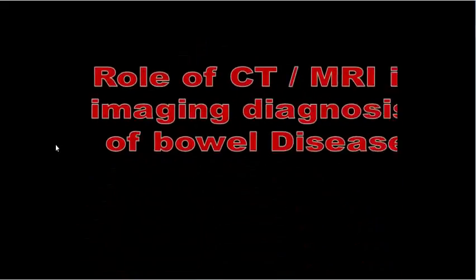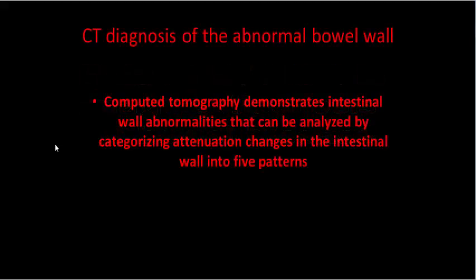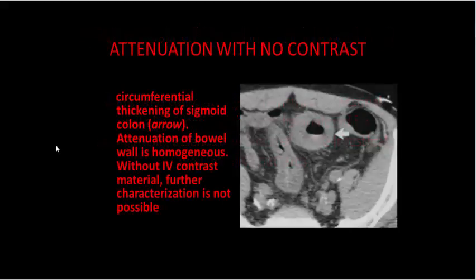Bismillahirrahmanirrahim. In this lecture, we talk about the role of CT and MRI in imaging diagnosis of bowel disease. CT diagnosis of abnormal bowel wall disease can be analyzed and categorized into five attenuation patterns of the bowel wall. The first pattern shows attenuation with no contrast, as we see circumferential thickening of the sigmoid colon. Attenuation of the bowel wall is homogeneous without intravenous contrast material, so further characterization is not possible.